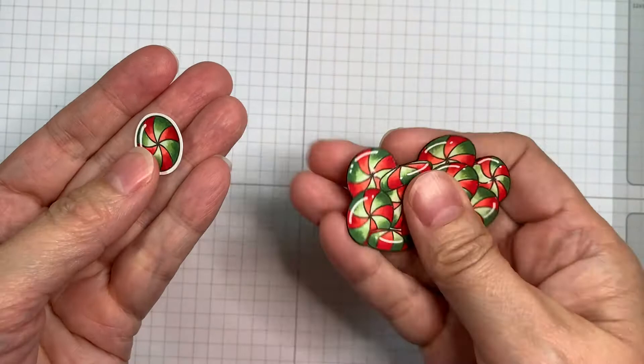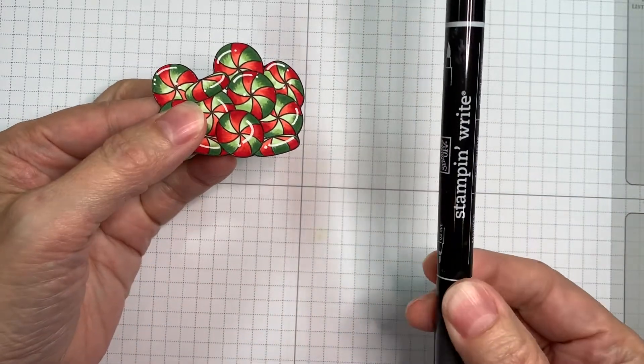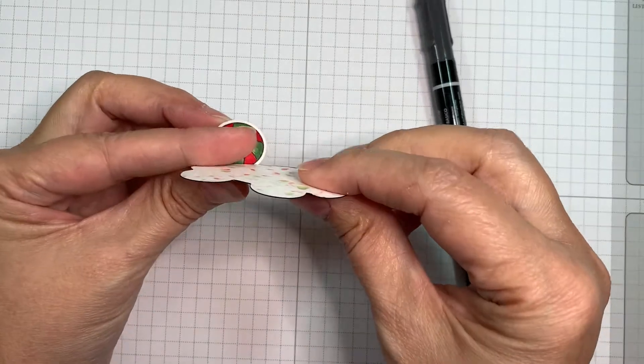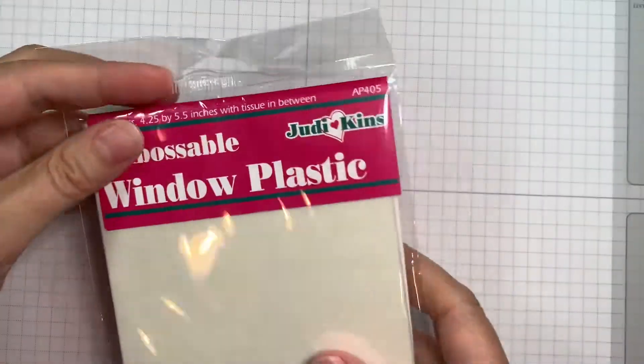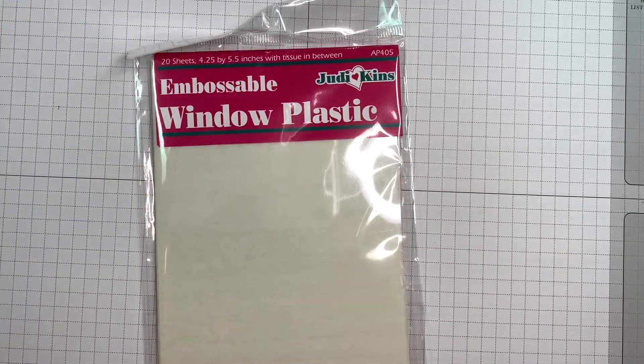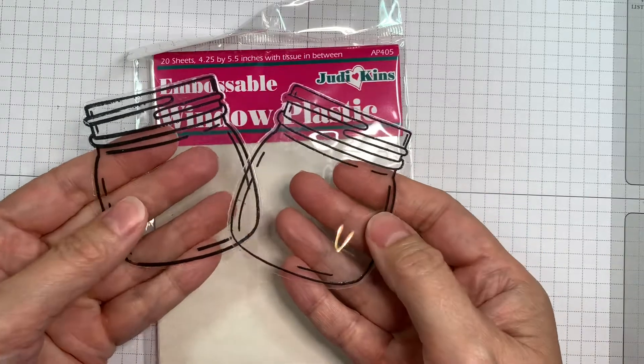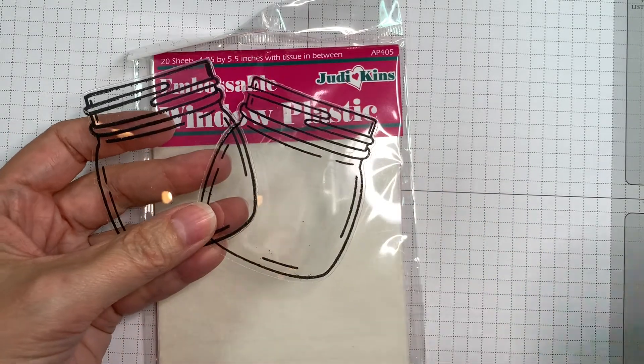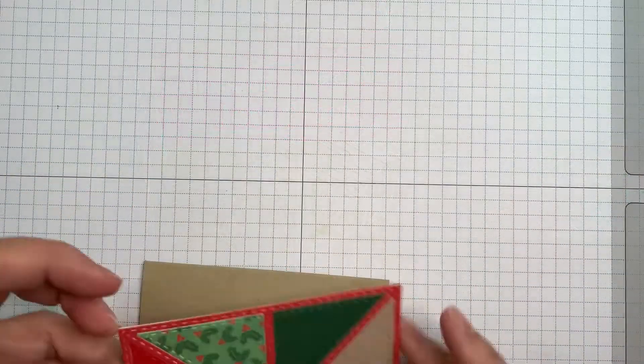So I went ahead and I stamped the images out with Ink on Threes Blackout Ink, colored them with Copics (they'll be listed on my blog), cut them out with my Brother Scan and Cut, one on the line, one with a 0.4 border, and I edged the one on the line with black ink. I'm using Judkins Window Plastic and I stamped out the two jars using VersaFine Claire Nocturne Ink with Fine Detail Jet Black Embossing Powder and melted it.